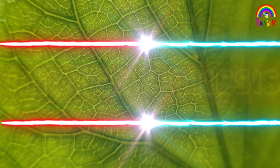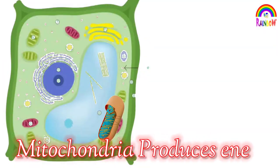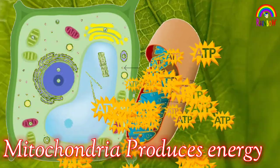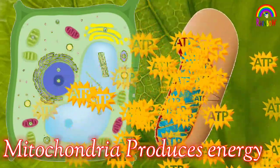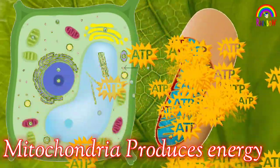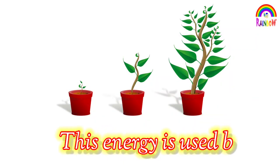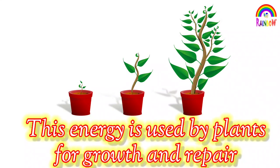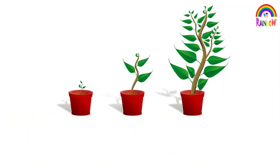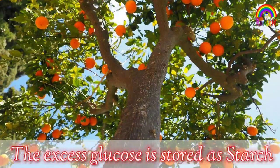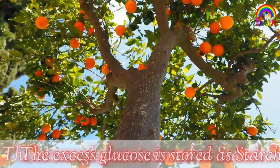The glucose produced in this process is then broken down by the mitochondria present in the plant cells into energy. This energy is used by plants for growth and repair. The excess glucose is stored as starch in the plant body.